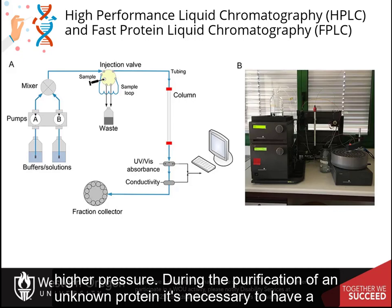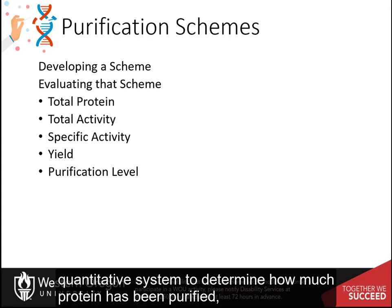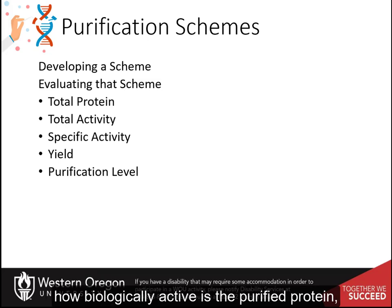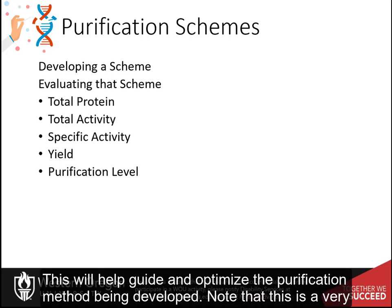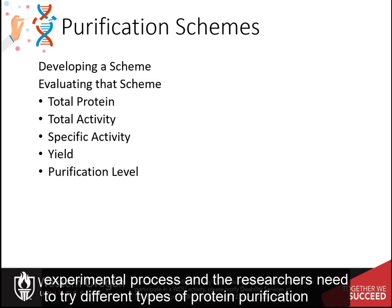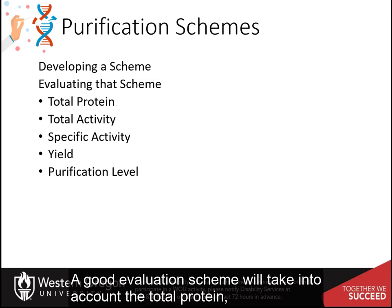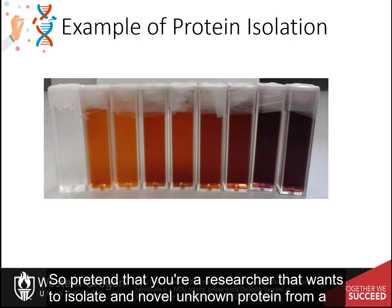During the purification of an unknown protein, it's necessary to have a quantitative system to determine how much protein has been purified, what concentration the protein represents from the original mixture, how biologically active the purified protein is, and the overall purity. This will help guide and optimize the purification method being developed. Note that this is a very experimental process, and researchers need to try different types of purification strategies to optimize their protocol. A good evaluation scheme will take into account total protein, total activity, specific activity, yield, and the purification level.